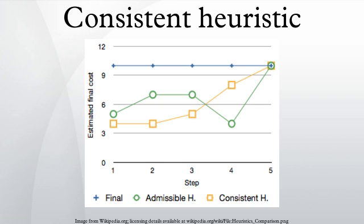In the study of pathfinding problems in artificial intelligence, a consistent heuristic function is a function that estimates the distance of a given state to a goal state, and that is always at most equal to the estimated distance from any neighboring vertex plus the step cost of reaching that neighbor.